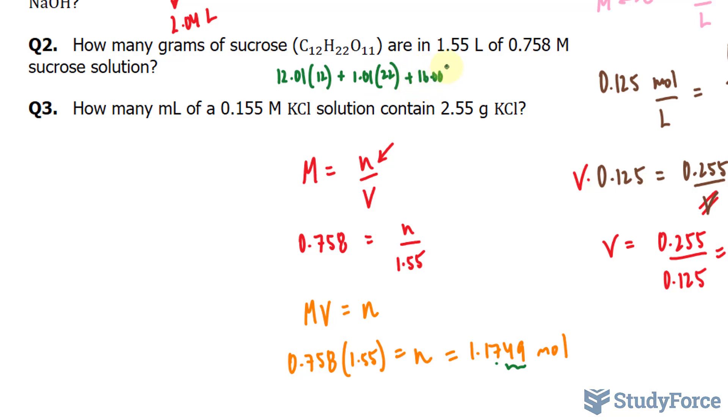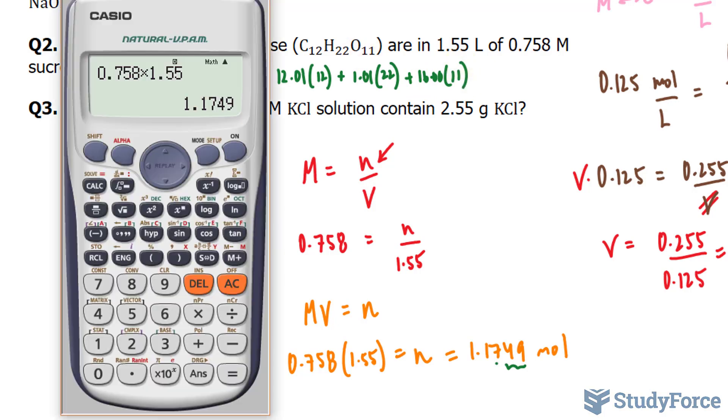Plus 16.00 times 11, which is the number of oxygen atoms within one molecule. Using my calculator, I have 12.01 times 12, plus 1.01 times 22, plus 16.00 times 11. That gives me a molar mass of 342.34 grams per mole.